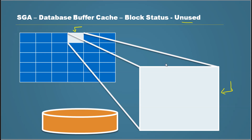So when a block is unused, Oracle knows it was never used since the start or restart of the database, and it knows this block is available to copy data into. When Oracle reads data from disk, it can straight away put that information into these blocks — nothing else is needed, just write.